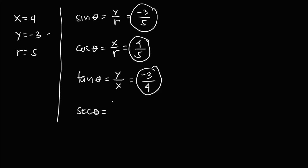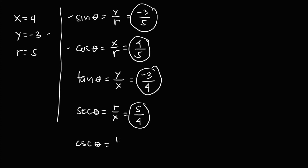Secant theta is the inverse of cosine theta, so it equals r over x: 5 over 4. Cosecant theta is the inverse of sine theta, so it equals r over y: 5 over negative 3, which is negative 5 over 3. These are the remaining trigonometric functions.